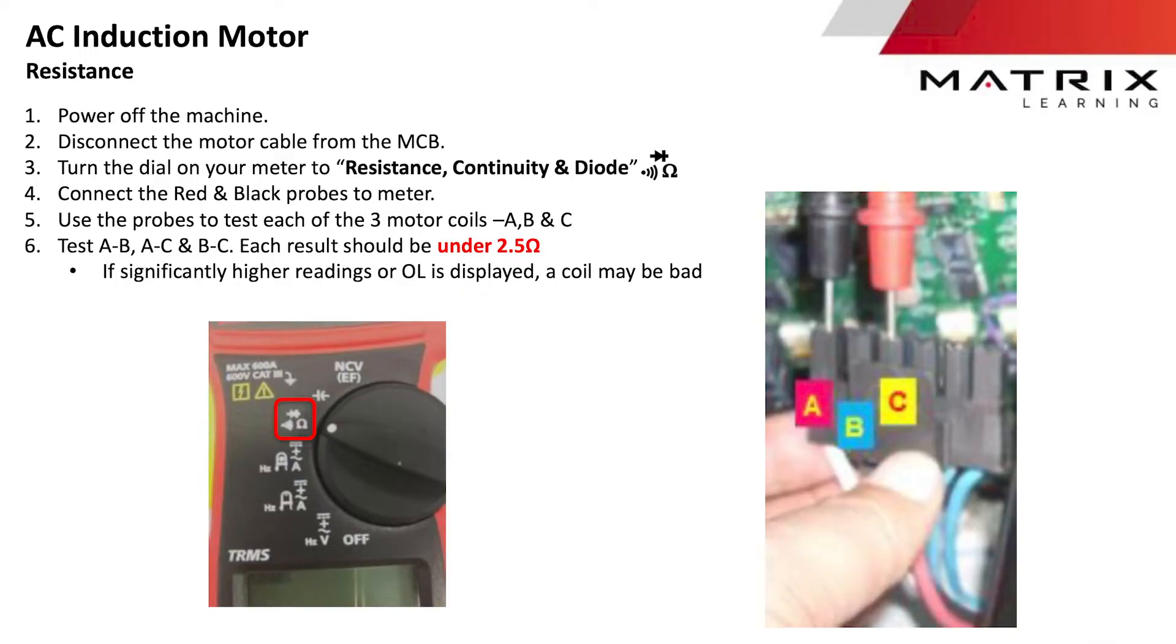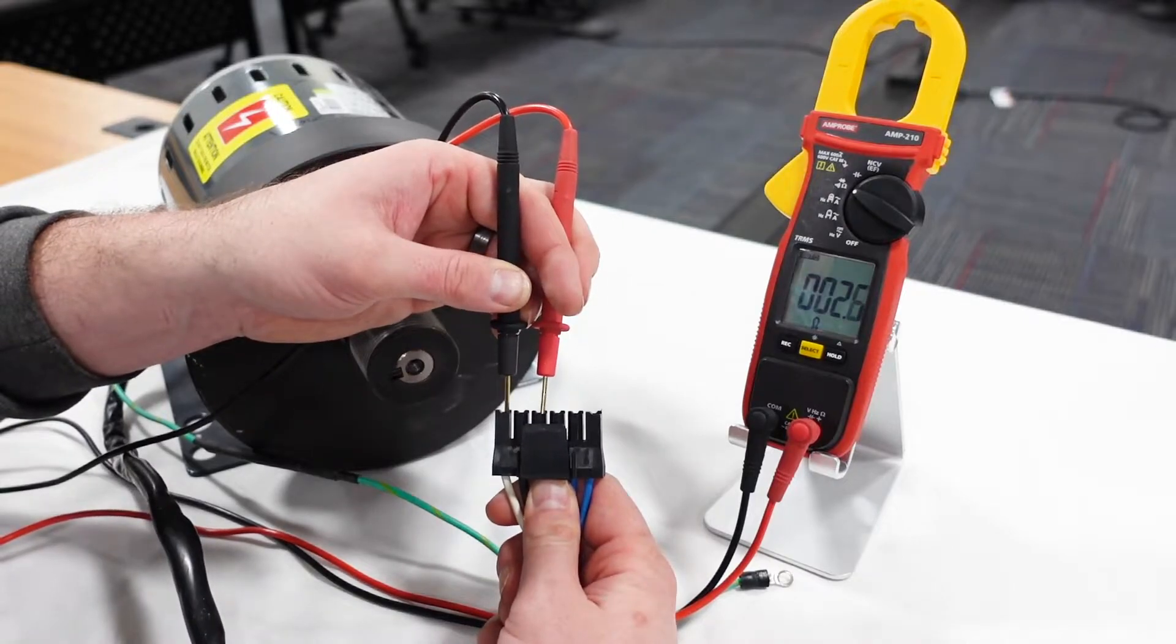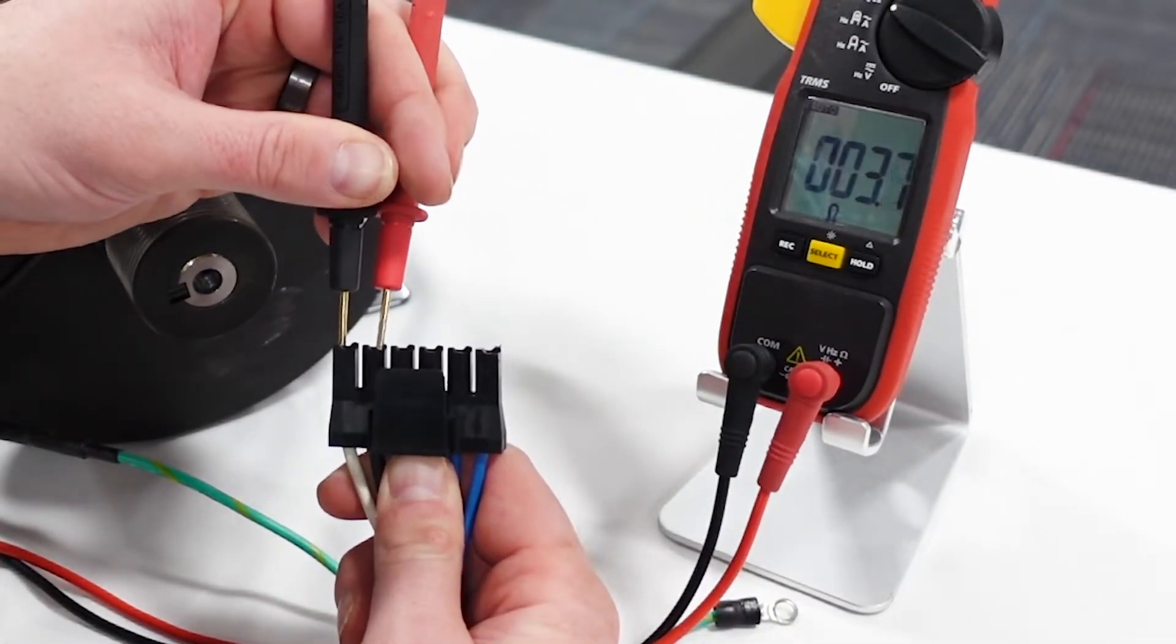If you need to test the AC drive motor, disconnect the motor from the control board and test resistance on each of the three motor coils. You should be getting less than two and a half ohms on any of the three pairs: white and red, white and black, and black and red.